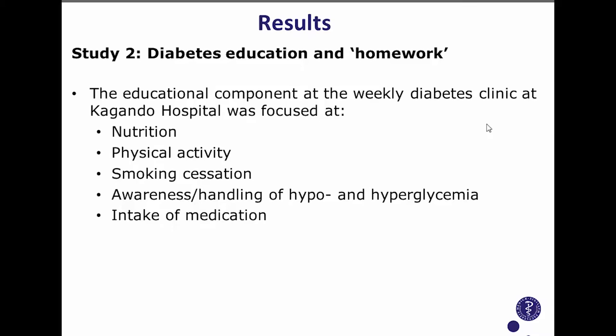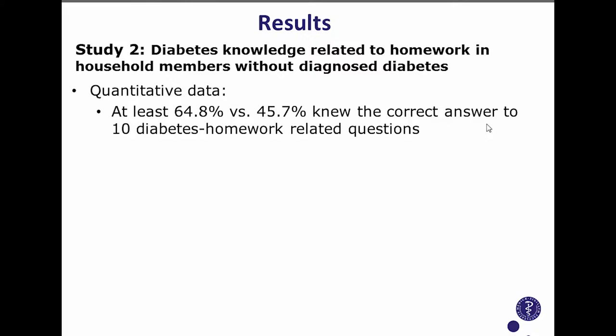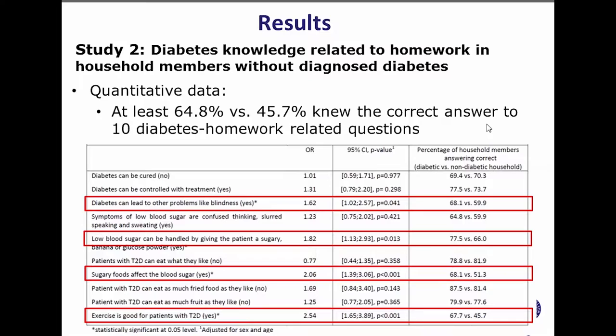For sub-study two on knowledge diffusion, observations at the diabetes clinic showed that the homework given to patients was related to nutrition, physical activity, smoking cessation, awareness and handling of hypo- and hyperglycemia, and medication intake. Looking at what household members knew, we had 10 questions. At least 64.8% of people in diabetic households knew the correct answer to all questions, compared to 45.7% in non-diabetic households. Four questions showed higher odds of correct answers in diabetic households: questions about diabetes complications, handling low blood sugar, how sugary foods affect blood sugar, and whether exercise is good for type 2 diabetes.